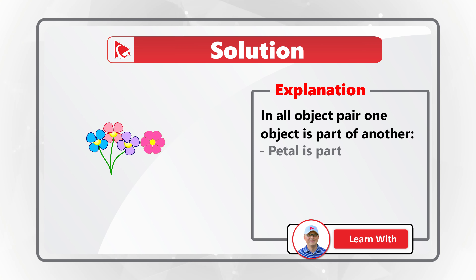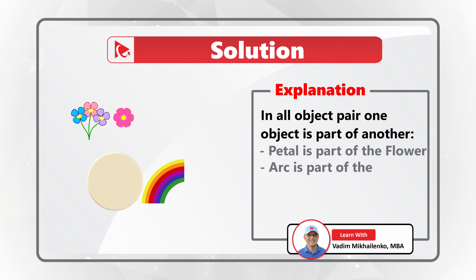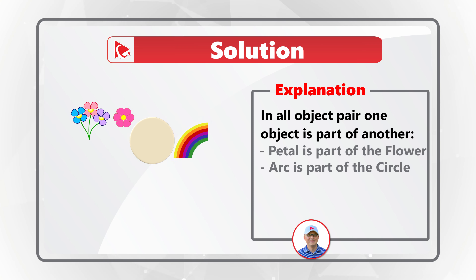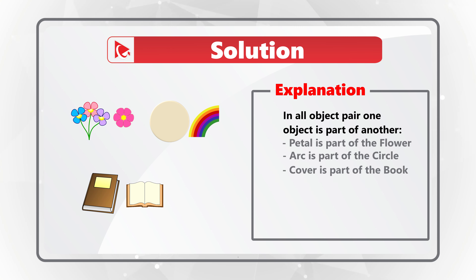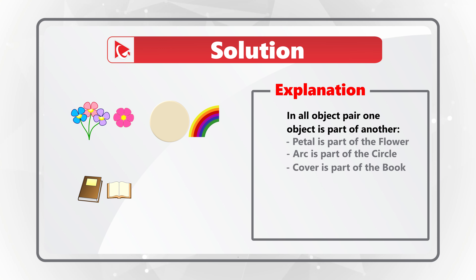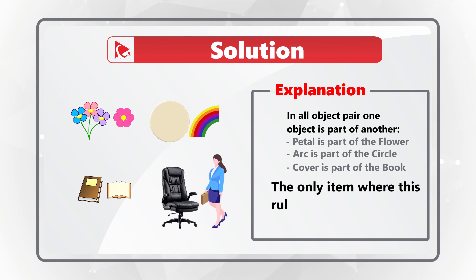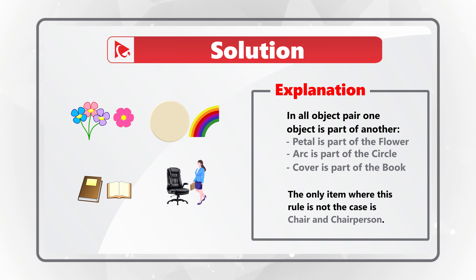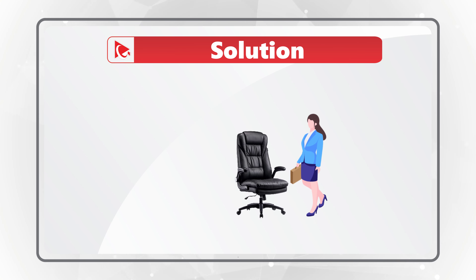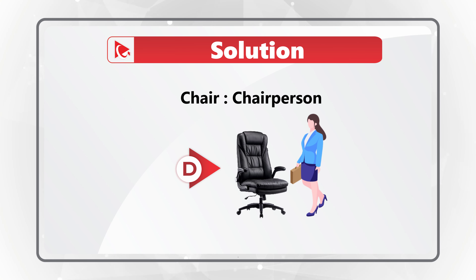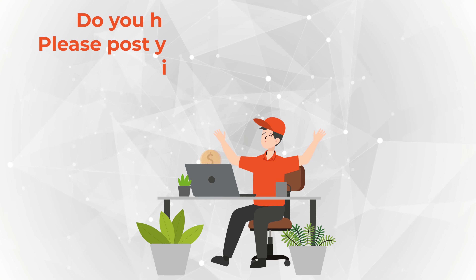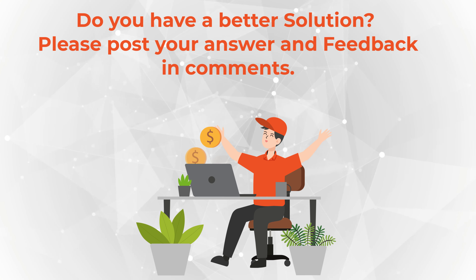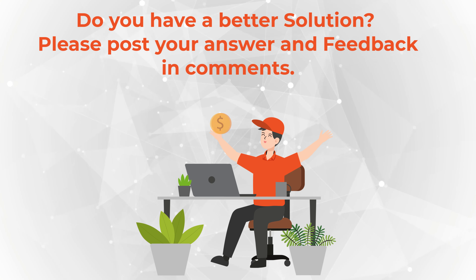Let's look at the examples. Petal is part of the flower. Arc is part of the circle. And cover is part of the book. The only word pair where this rule does not work is chair and chairperson — even though these words sound similar, they are not part of each other. So the correct answer is choice D, chair and chairperson.